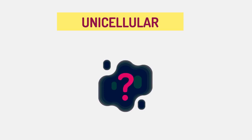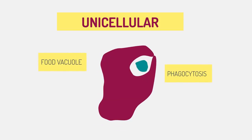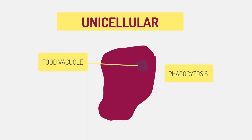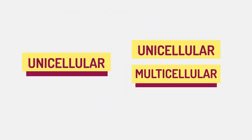How does a single cell manage nutrition? Usually by phagocytosis, where the food is engulfed and then stored in food vacuoles inside the organism. All prokaryotes are unicellular.